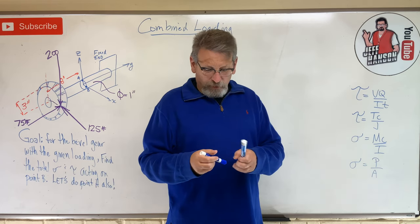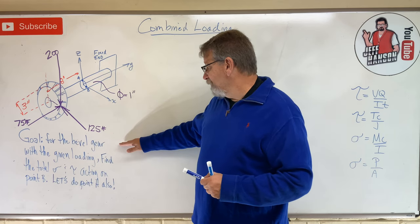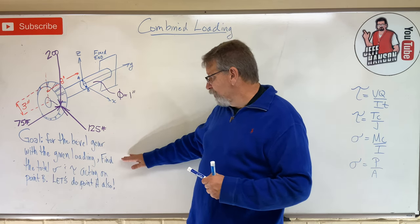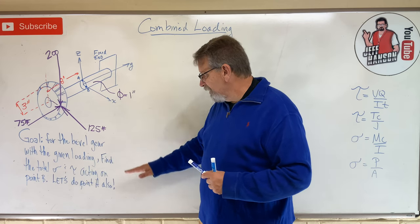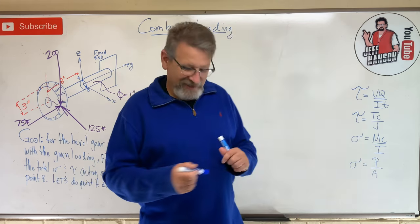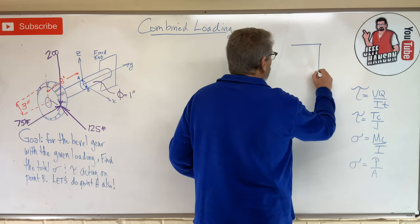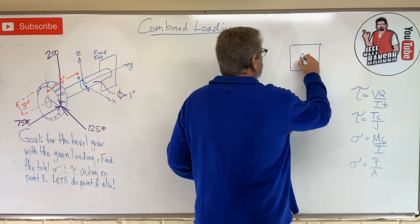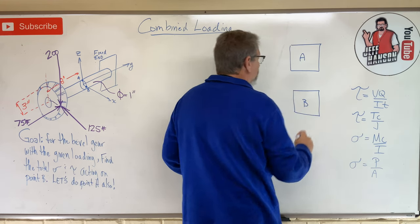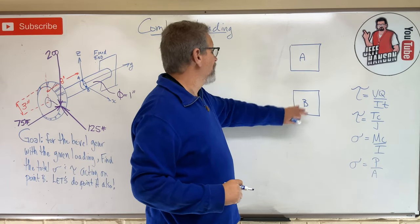So for everything we're going to do — like for this problem — find for the bevel gear with the given loading, find the total sigma and tau acting on point B, and let's do point A too. So what we're going to do is find the stress element for A and the stress element for B. Remember stress elements?